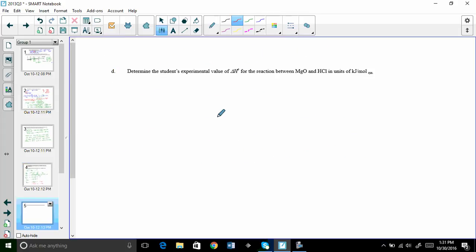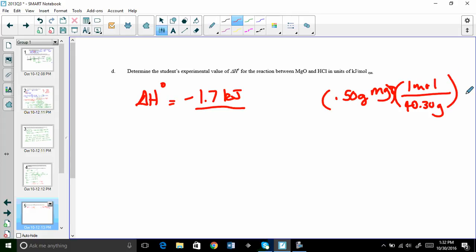So then slide five is determine the delta H for the reaction in kilojoules per mole Rxn. So delta H is delta H naught, it's negative 1.7 kilojoules per, and let's go back. I decided to use trial two. Well in trial two you had half a gram of MgO. I know that MgO is 40.30 grams per mole. And so 0.50 divided by 40.30, this ends up being 0.0124069 moles.